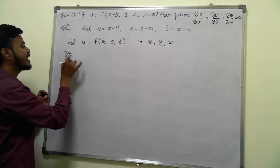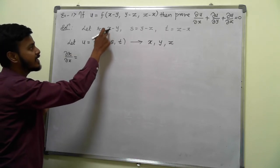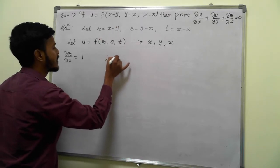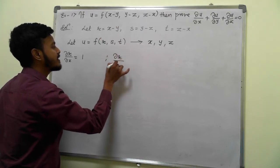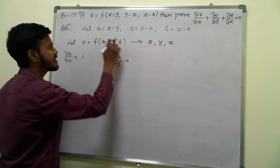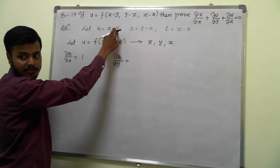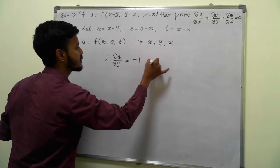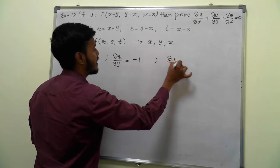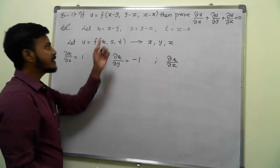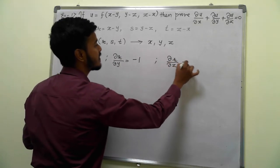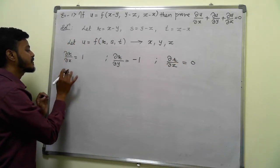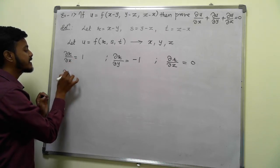∂r/∂x: r = x−y, derivative with respect to x is 1. ∂r/∂y: derivative of x is 0, derivative of y is 1, so 0−1 = −1. ∂r/∂z: there is no z term, so derivative is 0. That completes the derivatives for r; next is s.